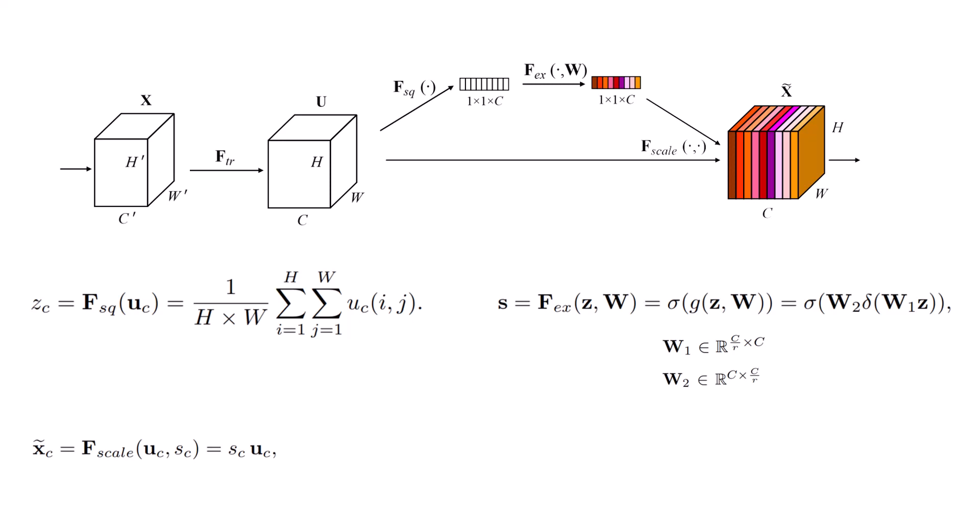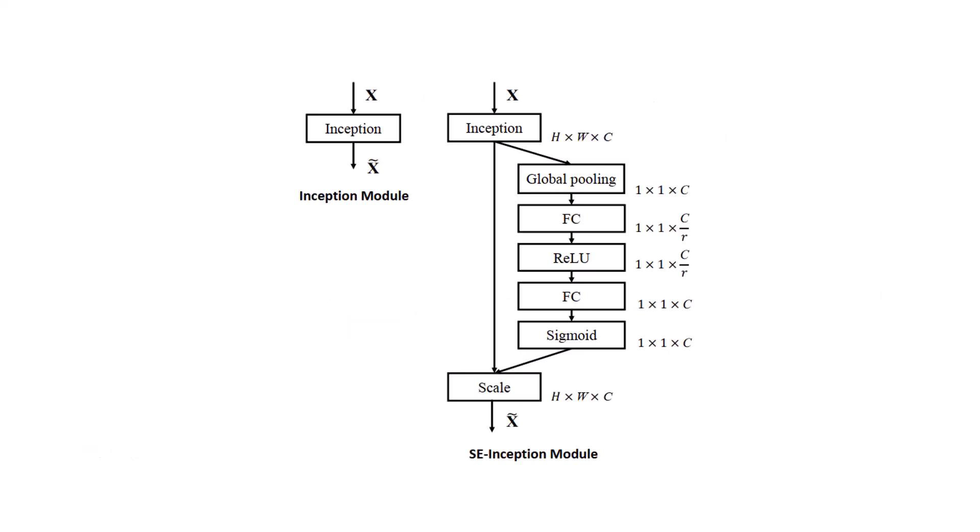But how can we use this in our architectures? For modules such as Inception that was proposed in GoogleNet, we just need to do the Inception module first, and then we have to do the squeeze and excitation, which is global average pooling, followed by a FC, and ReLU, and FC again, and sigmoid, and finally scaling it.